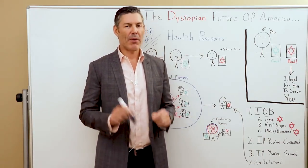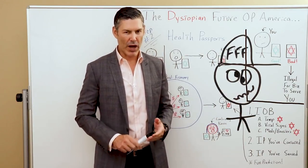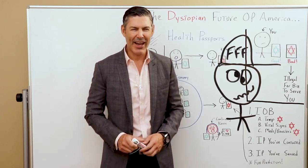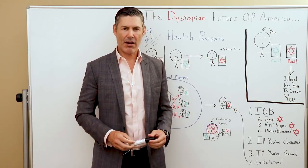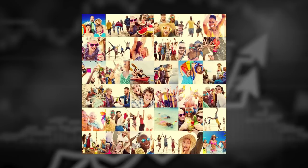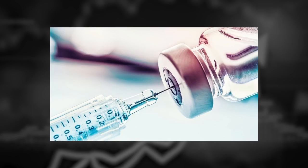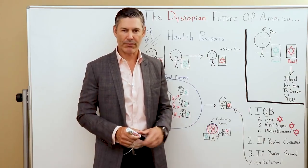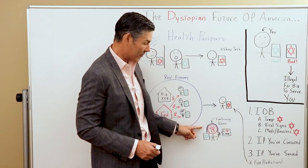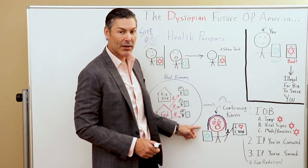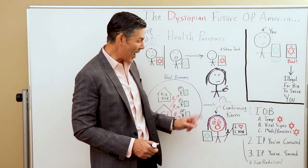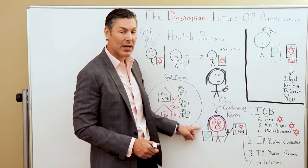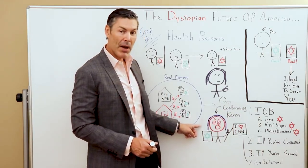I know right about now your friend and family member Fred is watching this saying, 'George, that is crazy talk. Why are you making such a big deal out of all of this? Why doesn't everyone just go down and get the required medicines? Then we won't have anything to worry about.' In fact, I even drew a character called Conforming Karen — looks very similar to Moody the Millennial. I think Karen could be Moody's parent.